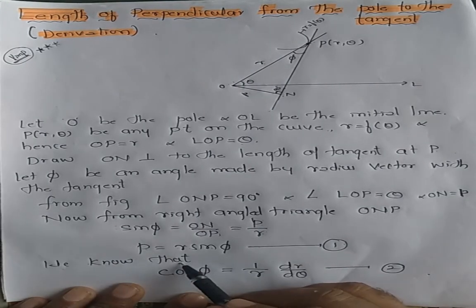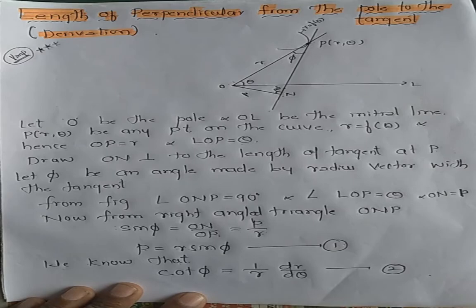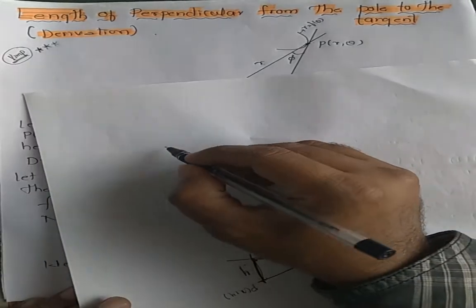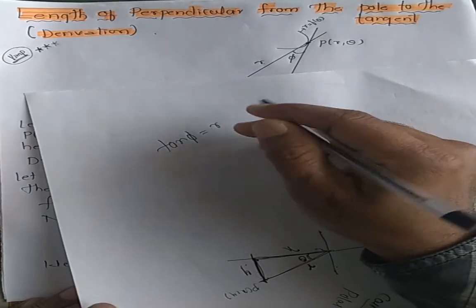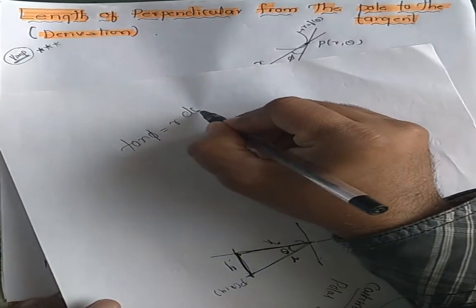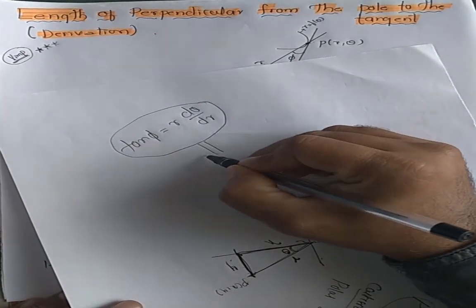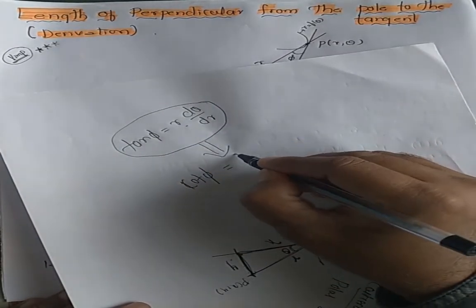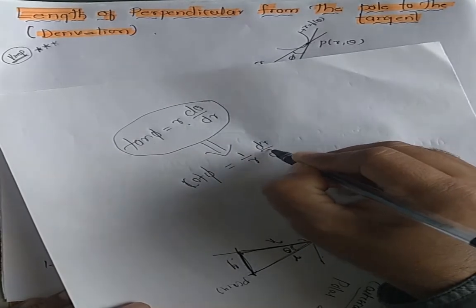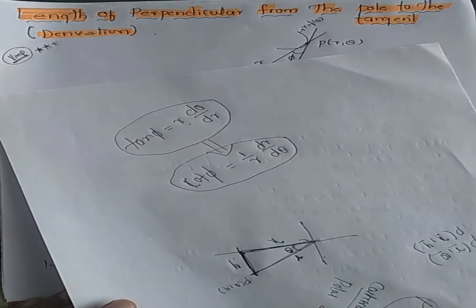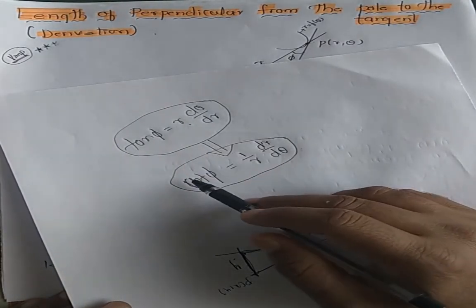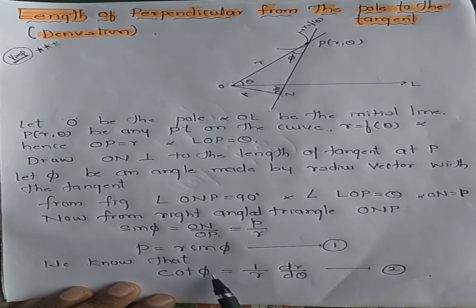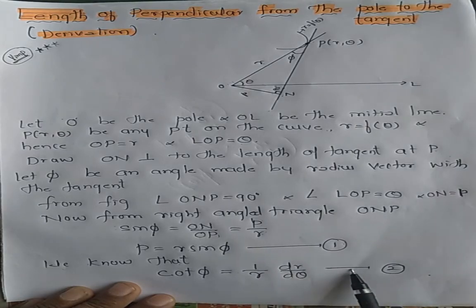From the previous derivation, we have proved that tan φ = r·dθ/dr. Taking the reciprocal, cot φ = (1/r)·(dr/dθ). We know this expression from the previous derivation. So cot φ = (1/r)·(dr/dθ). Call this Equation 2.